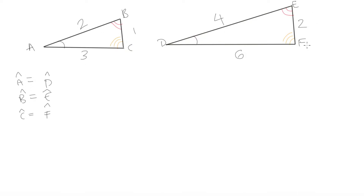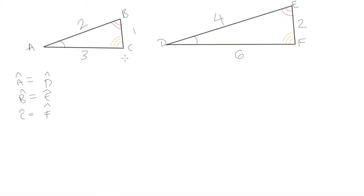We can notice that to get from BC to EF you multiply by 2, to get from AB to DE you multiply by 2, and to get from AC to DF you also multiply by 2. So each side of triangle ABC was multiplied by 2 to get the sides of triangle DEF — meaning all sides are just scaled versions of one another. That is the second criteria for similar triangles.